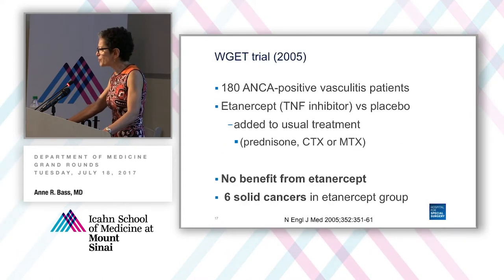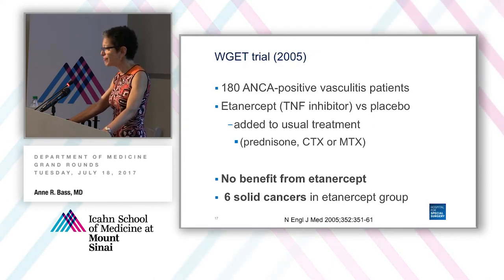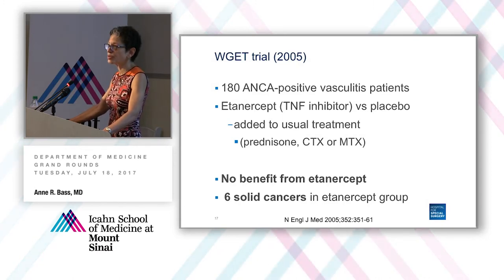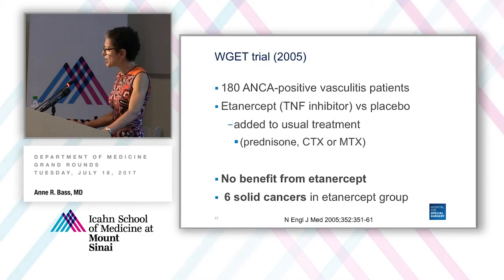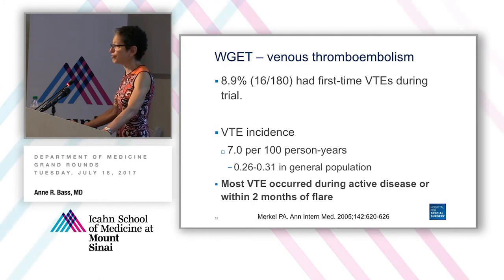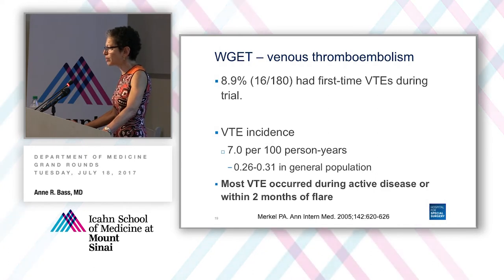To answer this question, we look back at a 2005 trial of almost 200 ANCA-positive vasculitis patients where Etanercept, a TNF inhibitor, was added versus placebo — an unfortunately negative trial. There were adverse outcomes including six solid cancers, and we learned not to combine TNF inhibitors with cyclophosphamide. Interestingly, several patients developed venous thromboembolism early: 9% had their first VTE during the study. The rate was 7 per 100 person-years, compared to approximately 0.3 per 100 person-years in the general population — a dramatic increase. Most VTE episodes occurred during active disease or within two months of a flare.